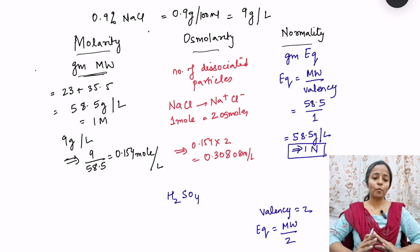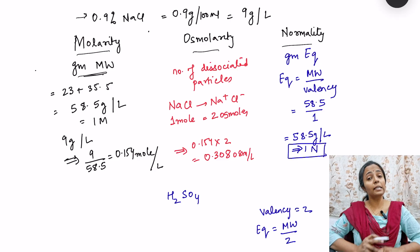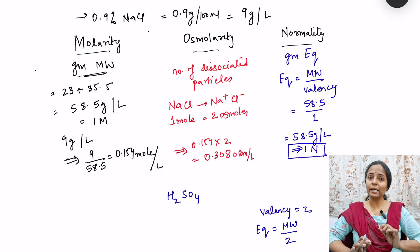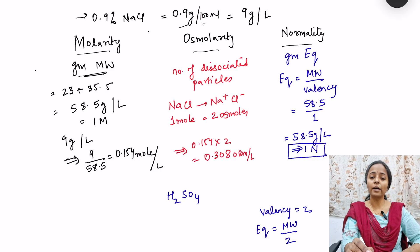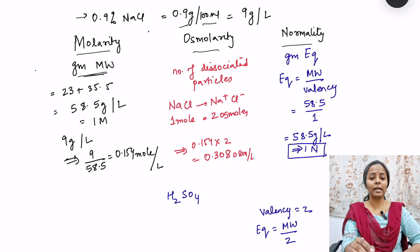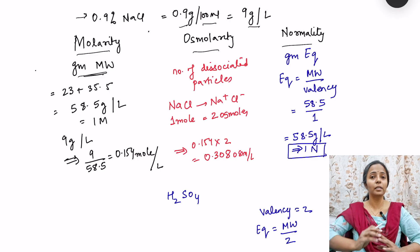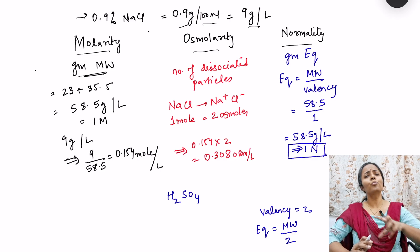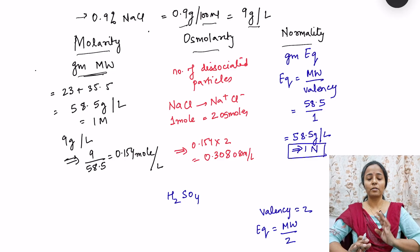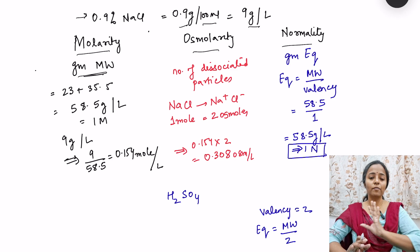For example, consider a 0.9% NaCl solution. 0.9% means 0.9 grams of the solute is dissolved in 100 ml. Since we are talking about moles per liter, we convert: 0.9% NaCl means 9 grams of NaCl is dissolved in one liter.